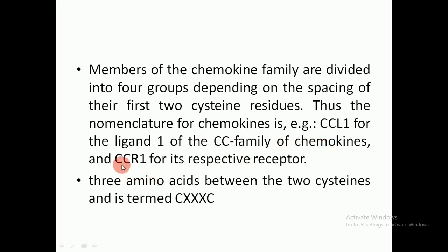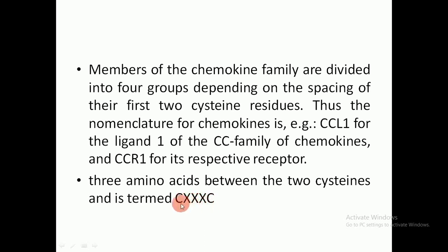In the cysteine-cysteine (CC) receptor, there is one amino acid between the two cysteines. When there are three amino acids between the two cysteines, it is termed CX3C — where C stands for cysteine and each X represents one amino acid, giving three amino acids between the cysteines.